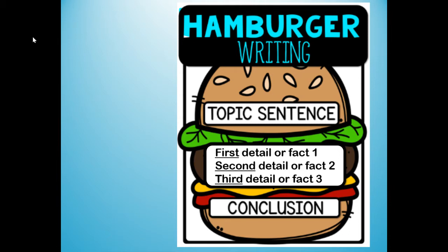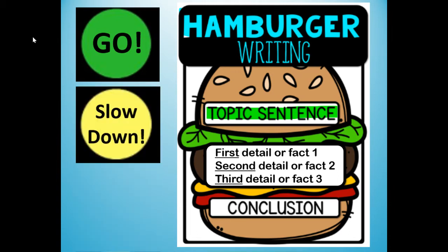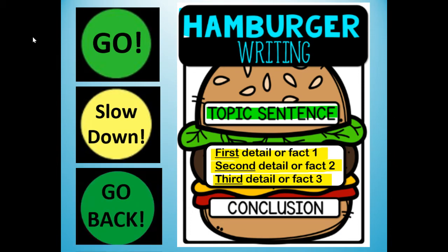When I say hamburger writing, we're going to state our topic sentence — I'm going to give you a topic sentence. Then we're going to slow down and you're going to write your first detail, or fact one sentence; your second detail, or fact two sentence; and your third detail, or fact three sentence. Once we're done with our three detail sentences, I'm going to remind you to go back using green again, and I'm going to give you your conclusion sentence that relates to the topic sentence.